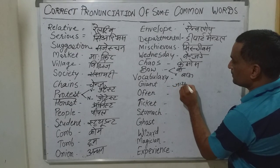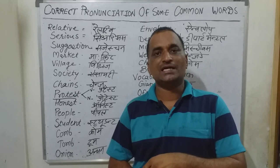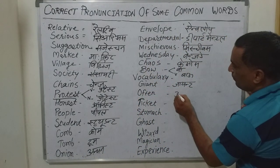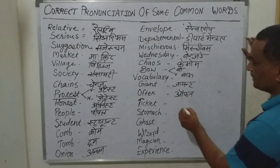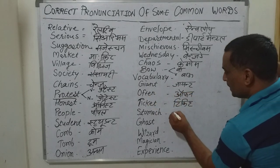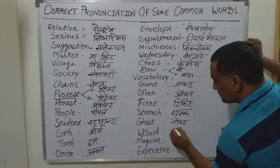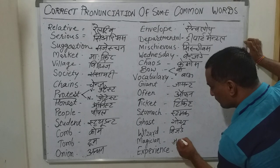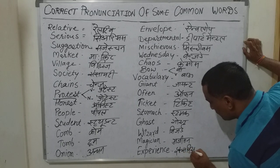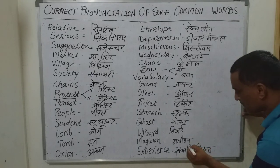The next word is 'giant,' meaning a giant or monster. Synonyms include demon, monster, devil, and giant. The next is 'often.' Then 'ticket' — pronounced 'ticket,' not 'ticket.' O-F-T-E-N is pronounced 'often.' Then 'stomach pit' — 'stomach.' The next is 'ghost' — not 'ghost,' but 'ghost.' Then 'wizard' and 'magician' — pronounced 'magician.' And finally 'experience' — pronounced 'experience.'